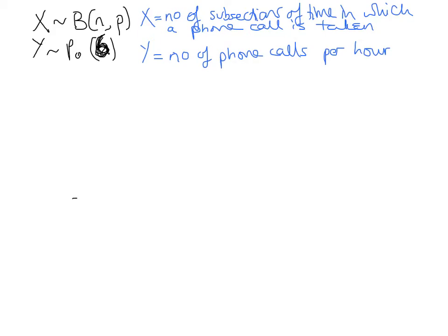So let's say we take an hour of time. We are getting phone calls and we make a note of when the phone calls come in. Now there are two ways of thinking about this. If we split the time up, say into 15 minute intervals, then we can think of it as a binomial. We could say x is the number of subsections of time — in this case 15 minutes — in which a phone call is taken.